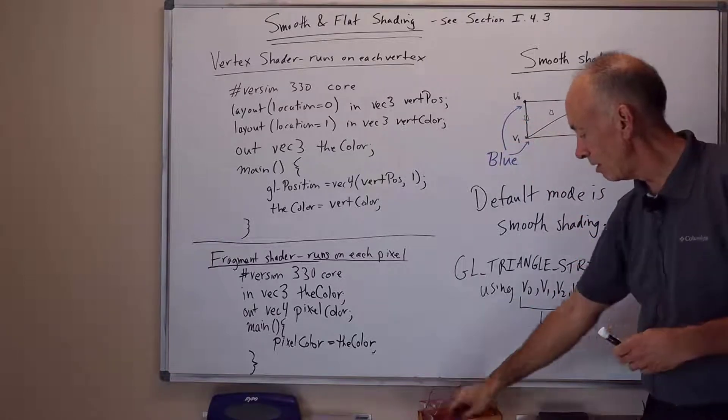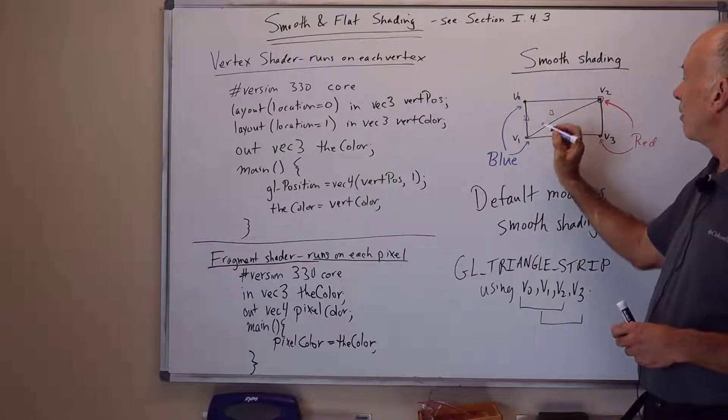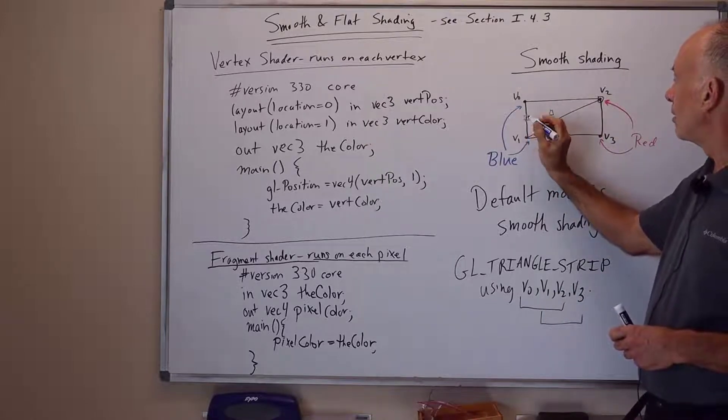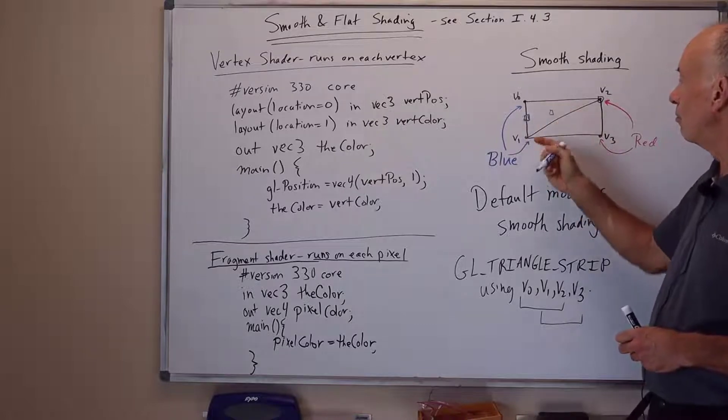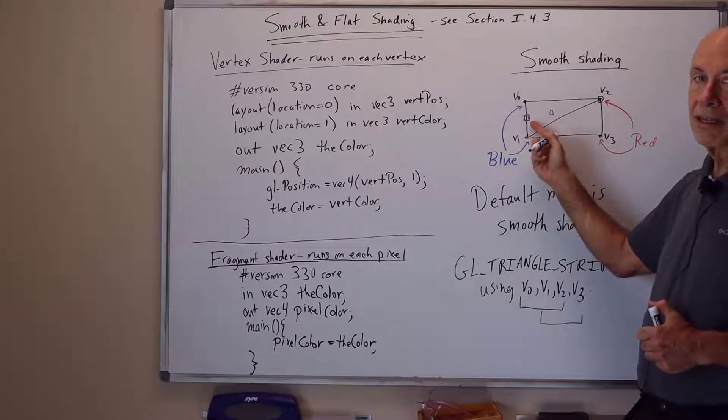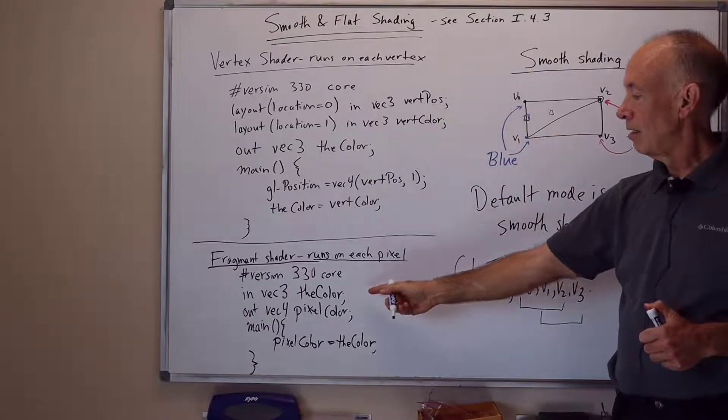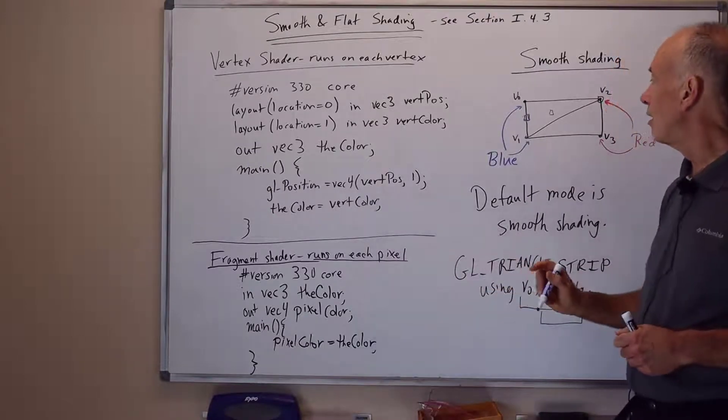So this pixel here on the left-hand edge, it's all the way to the left. This color is the average of the color on V1 and V0, which is blue. So when the fragment shader is run on this pixel, it'll get the color blue. That's RGB values of 001 for the variable the color.